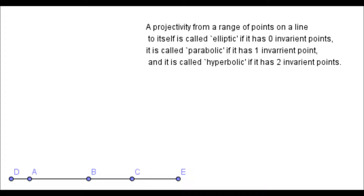We're looking at projectivities from a range of points on a line to itself, and we're interested in classifying them — sorting these different mappings into families. One important thing to bear in mind is Axiom 6 from our initial axioms of projective geometry, which were discussed in FPG 3.